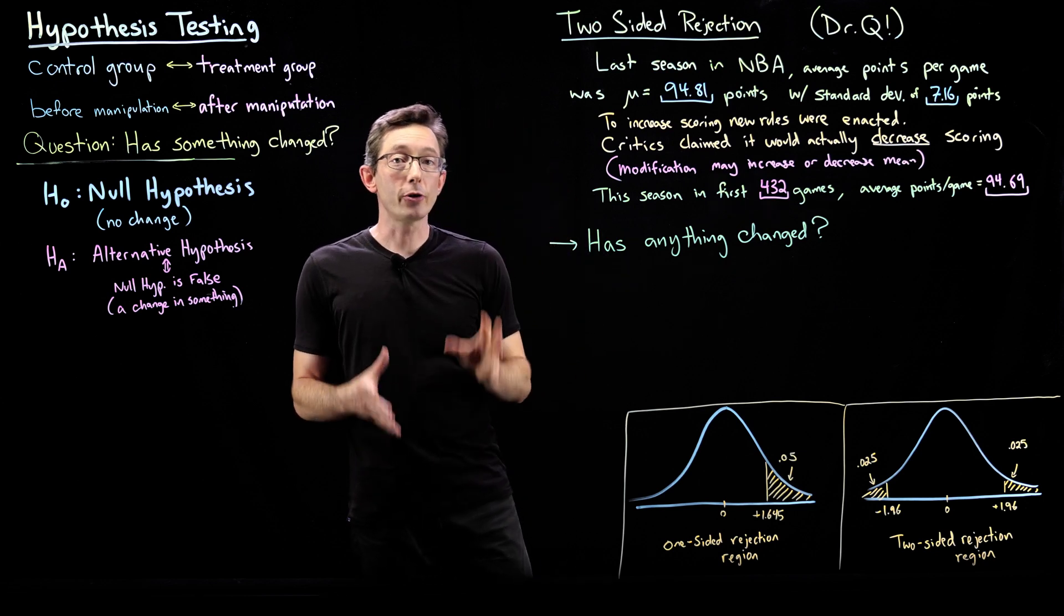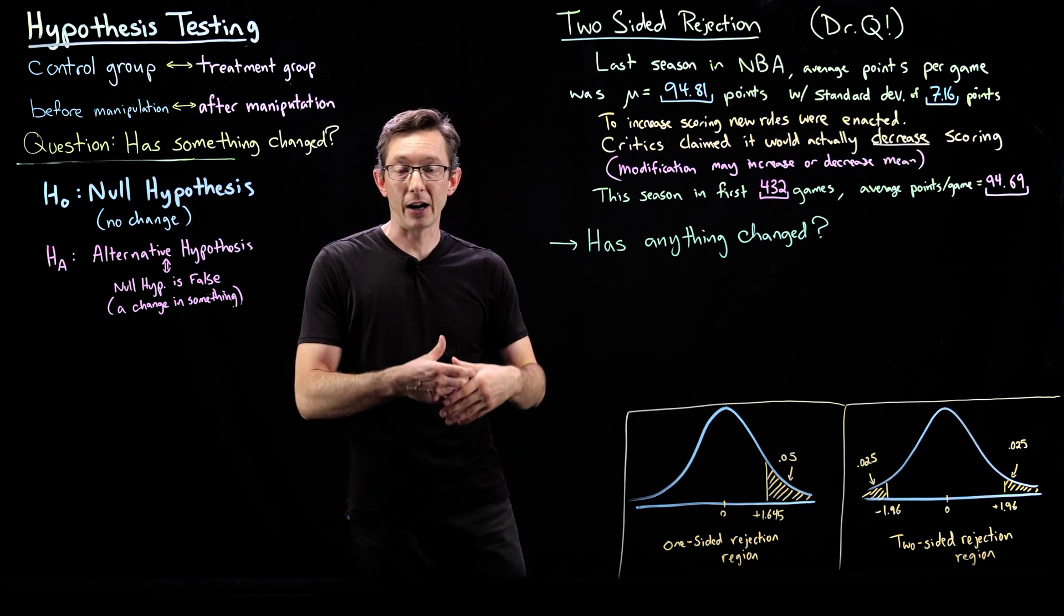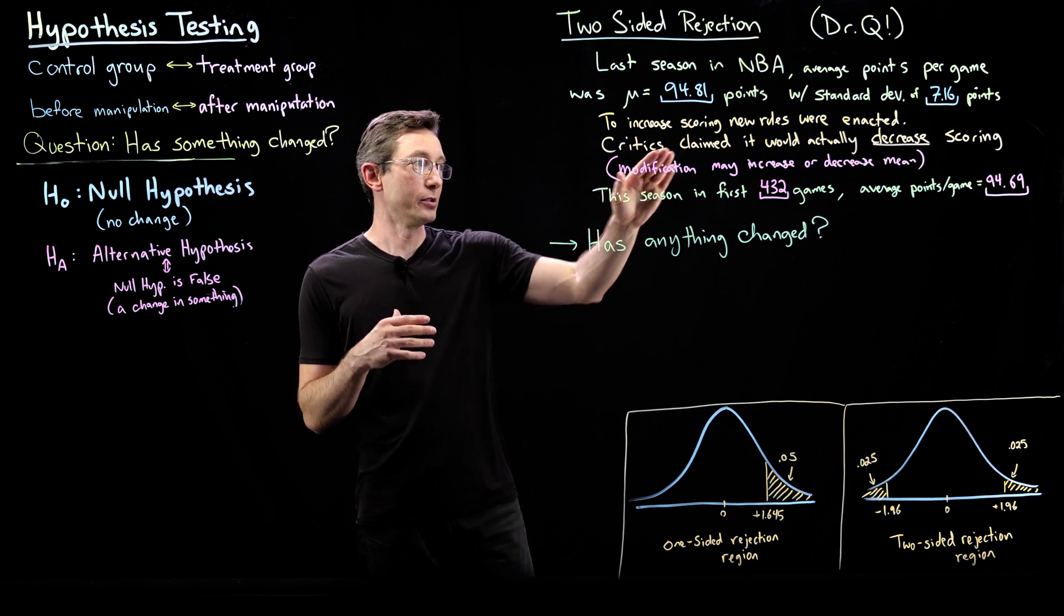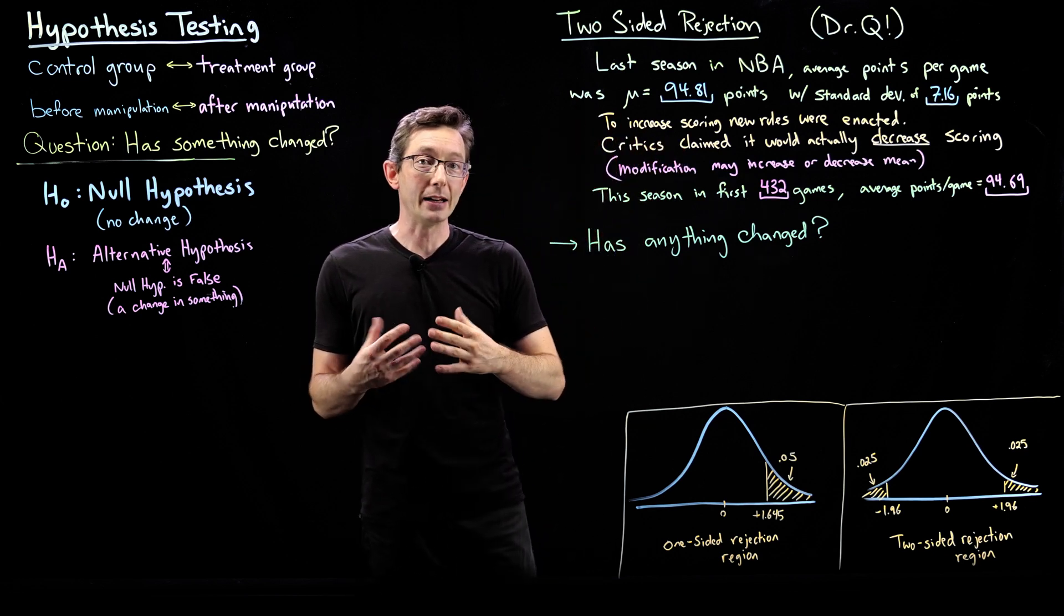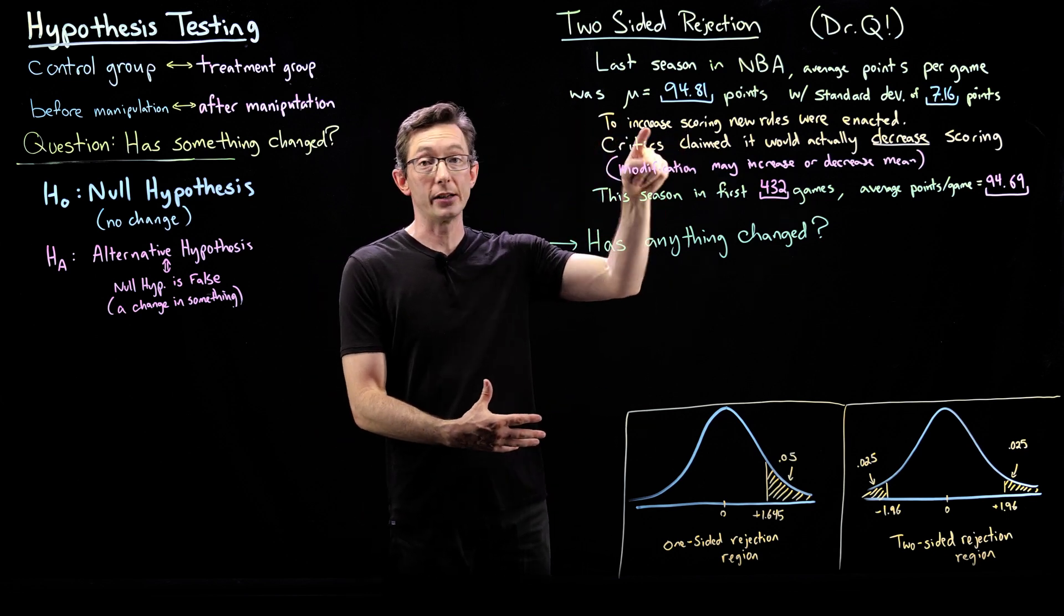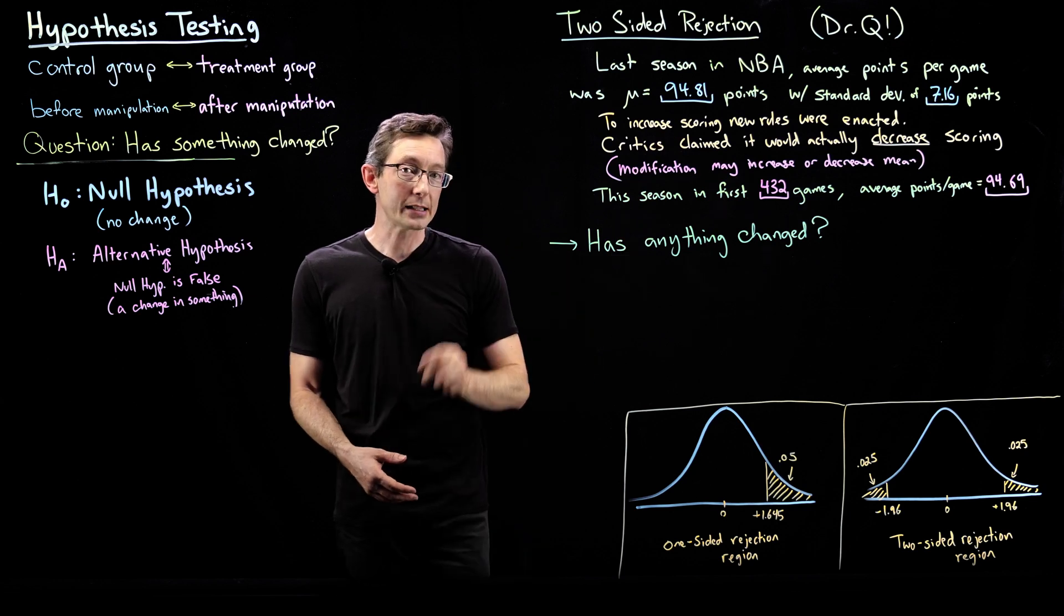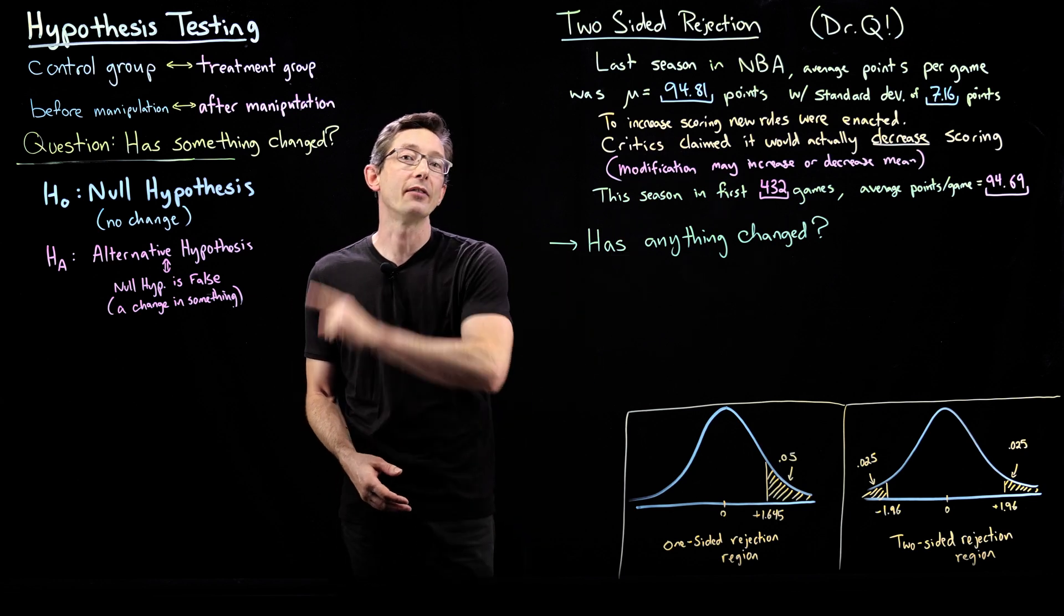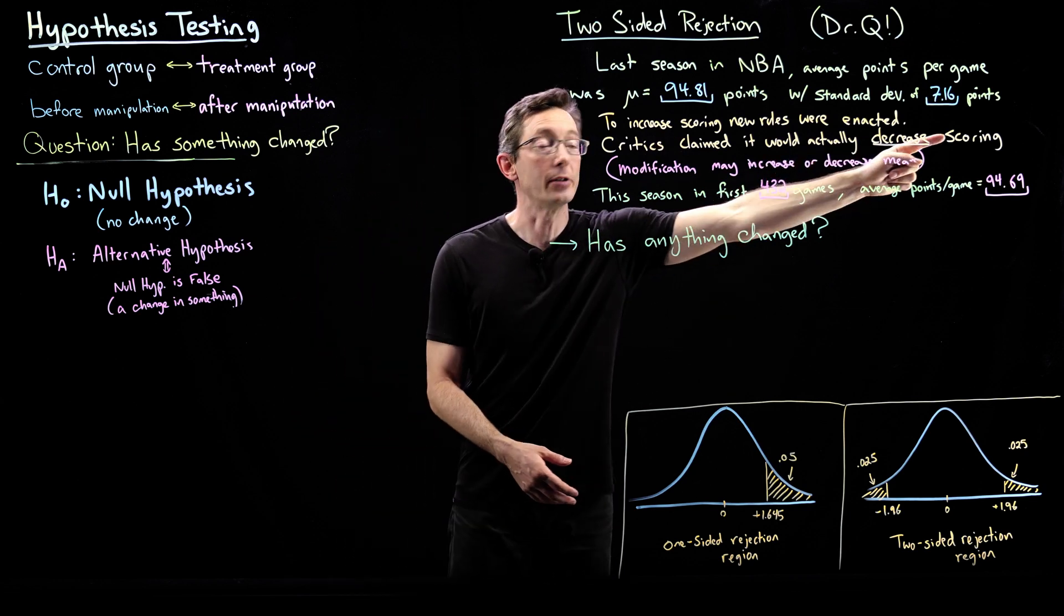the average points per game were 94.81 with a standard deviation of 7.16 points. To increase scoring and improve viewer numbers, the NBA enacted new rules. But critics said it would actually have the opposite effect and decrease scoring.